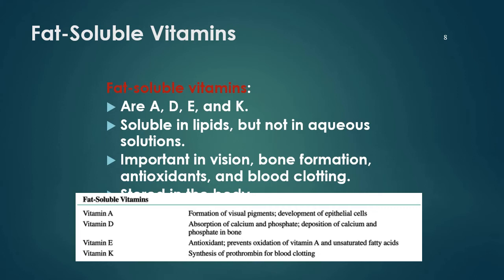Vitamin E serves as an antioxidant and prevents the oxidation of vitamin A and unsaturated fatty acids. Vitamin K is important for synthesizing prothrombin for blood clotting. If we are lacking in vitamin K, prothrombin cannot be synthesized, and in case of an accident, it will take a very long time for blood to clot, causing a huge blood loss.